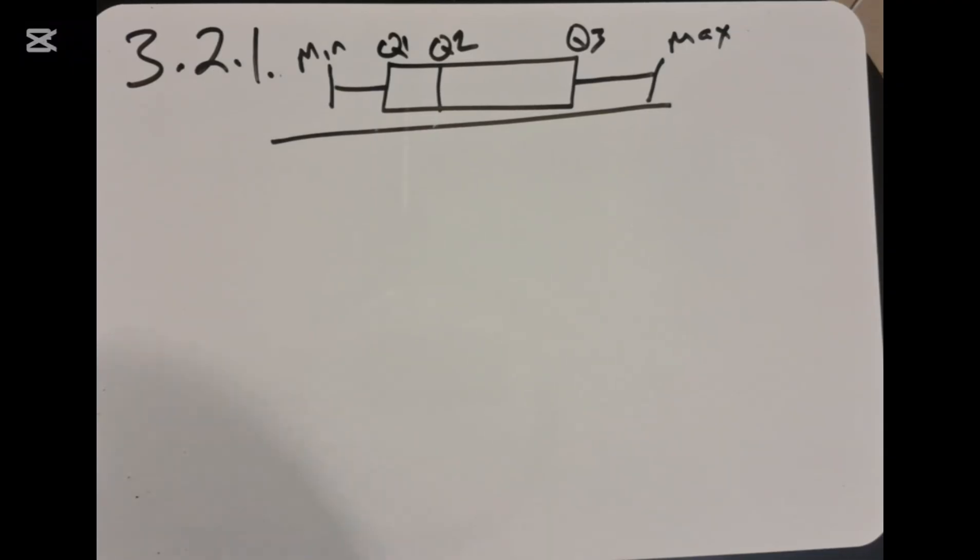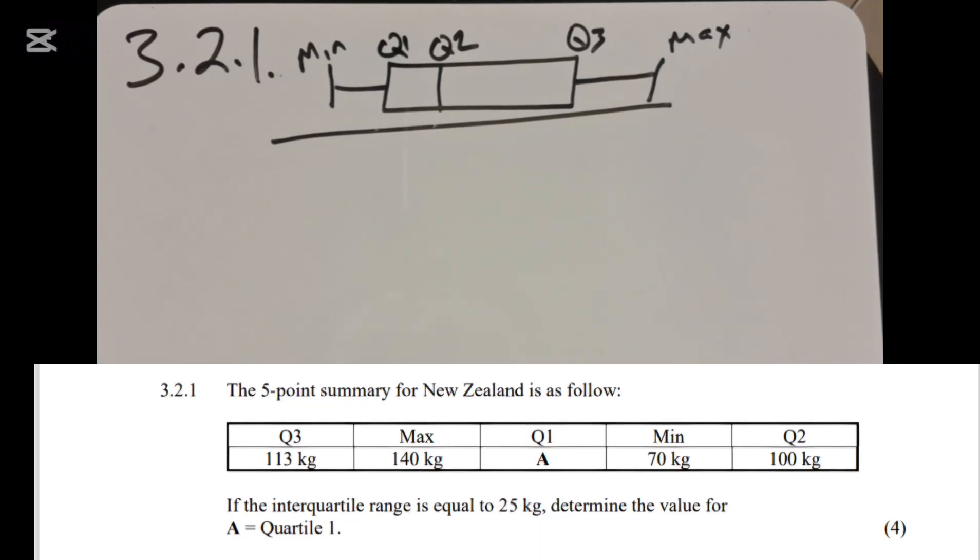Let's look at the first question, which is 3.2.1. The five-point summary for New Zealand is as follows: we are given Q3, the max, Q1, the min, and Q2. If the interquartile range is equal to 25 kg, determine the value for A, which is Q1.